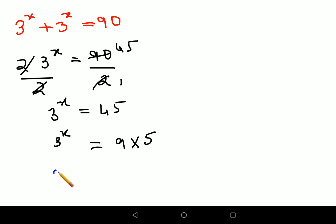Why did I write it in terms of 9 × 5? Because instead of 9, I can write this as 3^2 × 5. I'm trying to write everything in terms of 3 because the LHS is also in terms of 3.